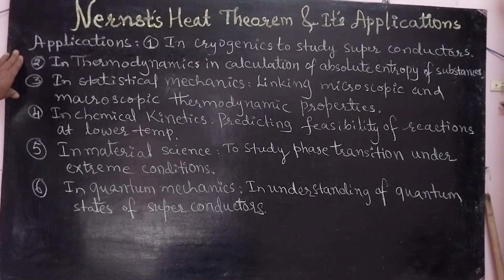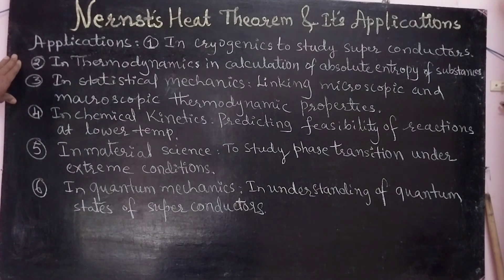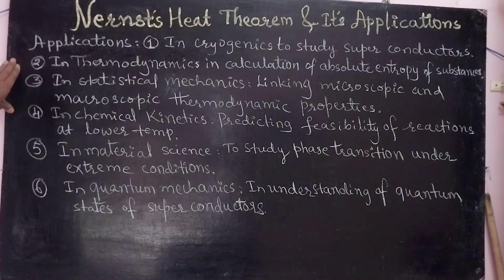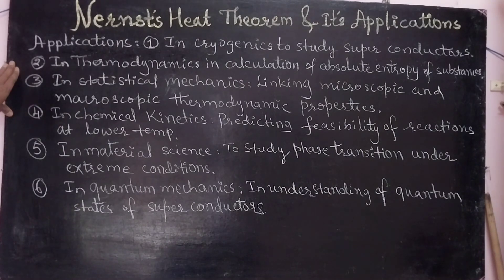Third, in statistical mechanics, in linking microscopic and macroscopic thermodynamic properties. Fourth, in chemical kinetics, the Nernst Heat Theorem may be used in predicting the feasibility of reactions at low temperature. Fifth, in material science, to study phase transitions under extreme conditions. Sixth, in quantum mechanics, the Nernst Heat Theorem may be used in understanding the quantum states of superconductors.